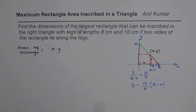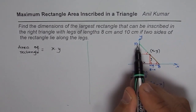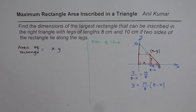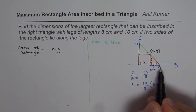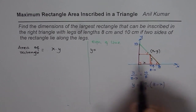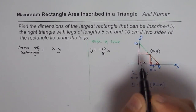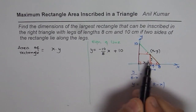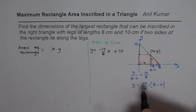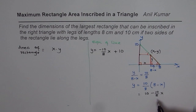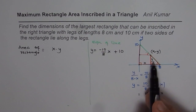The other approach is to use the equation of the line along the hypotenuse. The y-intercept is 10 and the slope is minus 10 over 8. So the equation of the line is y equals minus (10/8)x plus 10. Expanding, you get y equals 10 minus (10/8)x — exactly the same relation as before.